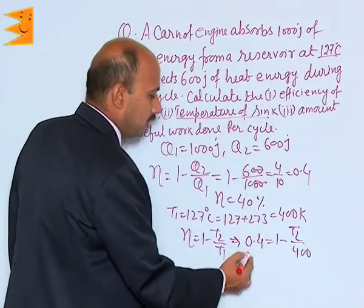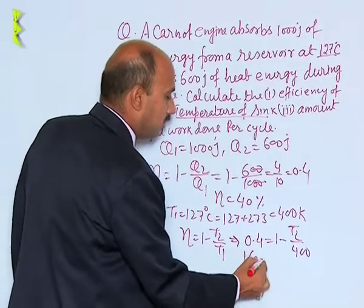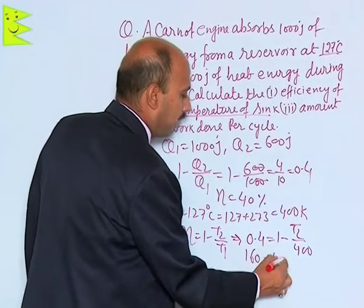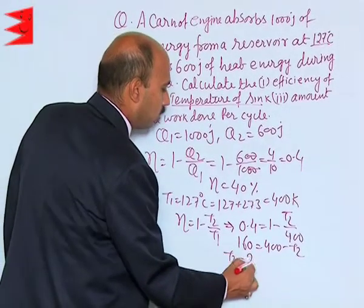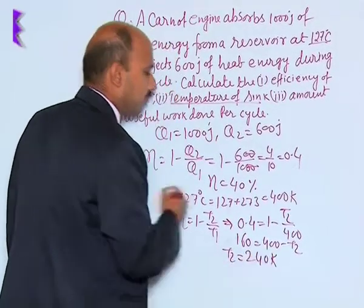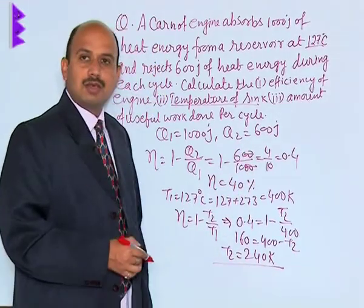When you solve it, you get 160 equals 400 minus T2. So T2 equals 240 Kelvin. This is the temperature of the sink.